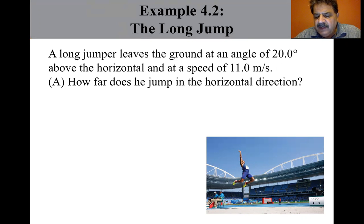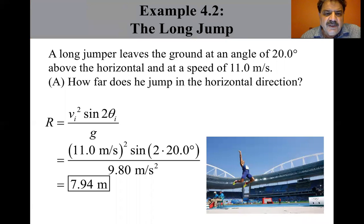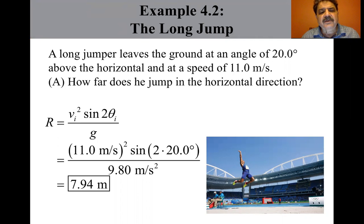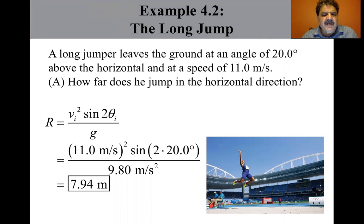Analyze. We find the range of the jumper using the range equation. The range equation is R equals V-initial squared times sine 2-theta-initial divided by G. If you put in the numbers, you get 7.94 meters.